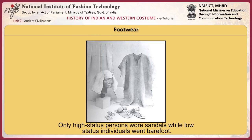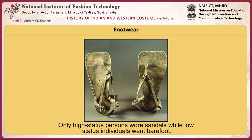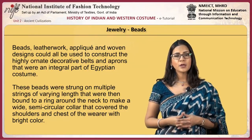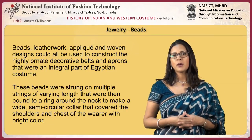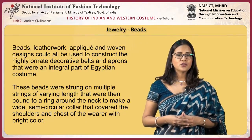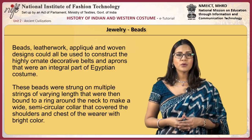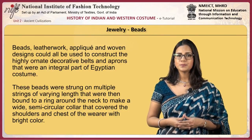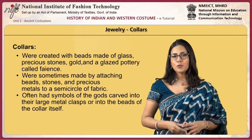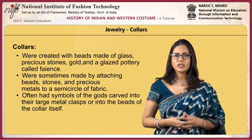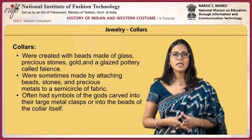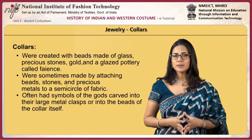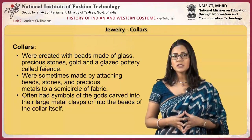Only high status persons wore sandals while low status individuals went barefoot. Beads, leather work, applique and woven designs could all be used to construct highly ornate decorative belts and aprons that were an integral part of Egyptian costume. These beads were strung on multiple strings of varying lengths, then bound to a ring around the neck to make a wide semi-circular collar that covered the shoulders and chest of the wearer with bright color. Collars were created with beads made of glass, precious stones, gold and a glazed pottery called faience. Collars often had symbols of the gods carved into the large metal clasps or into the beads of the collar itself.